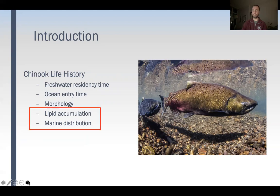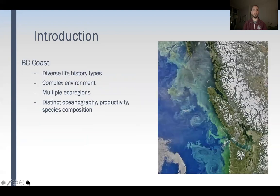I'm particularly interested in these last two — both individually and how they interact with each other. These are really important here in British Columbia, because in BC we have an extremely diverse group of life history types of Chinook salmon, encompassing almost all possible life history types, coexisting in an extremely complex environment composed of multiple ecoregions, each with its own distinct oceanography, productivity, and species composition.